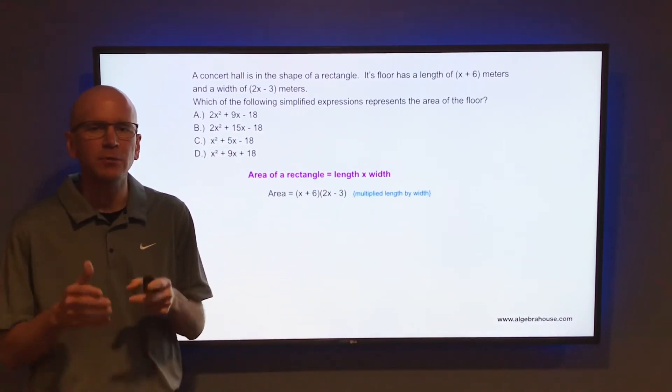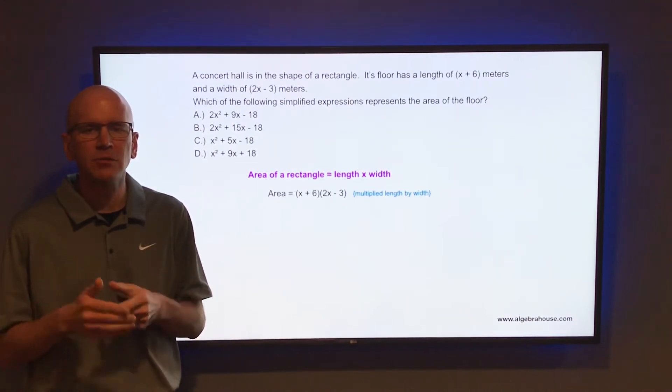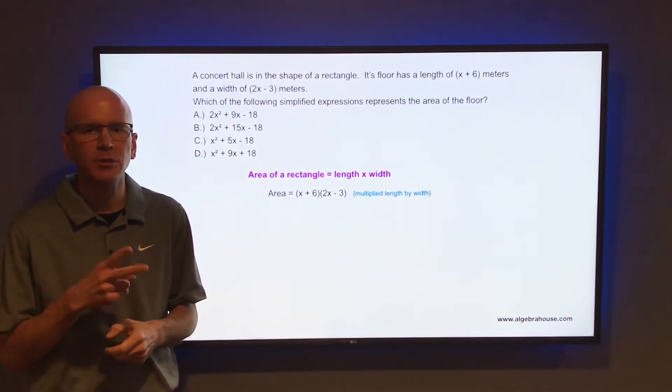To multiply those two binomials, you can either use the FOIL method or distributive property. Remember, the FOIL method and the distributive property are the same things when you're multiplying two binomials.